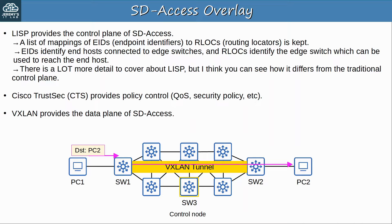VXLAN does more than just create tunnels — it provides a lot of features to SD Access. Just know the difference between fabric, overlay, and underlay, and know some basics of SD Access like edge node, border node, and control node, LISP, VXLAN, and Cisco TrustSec.